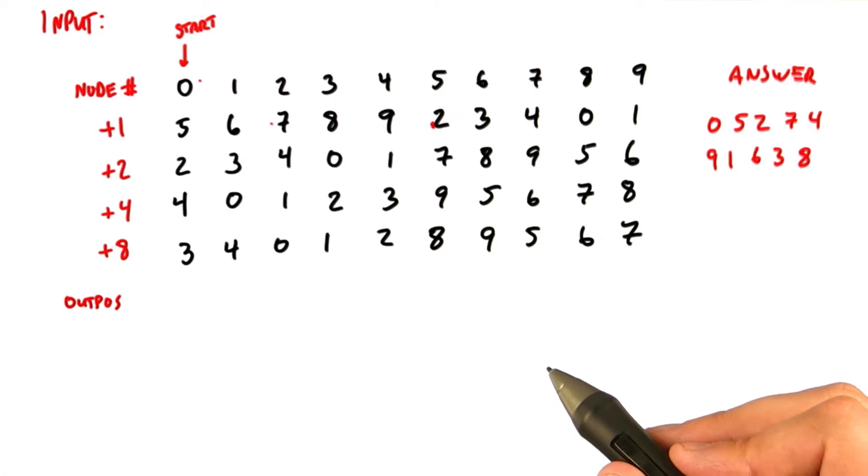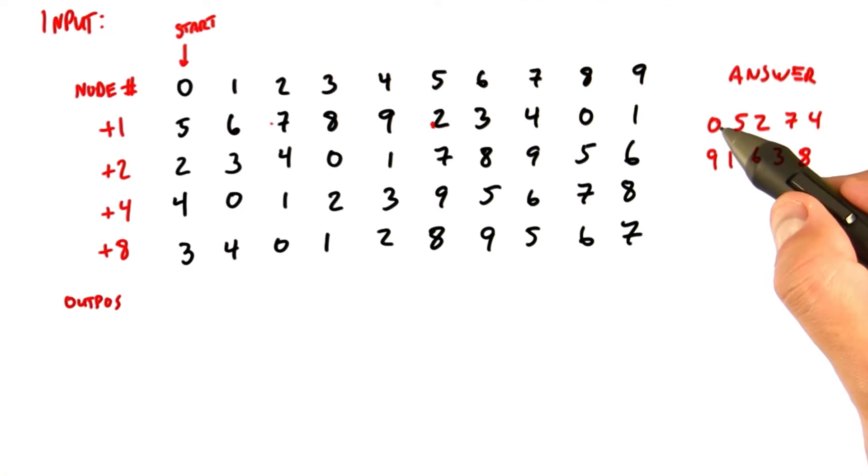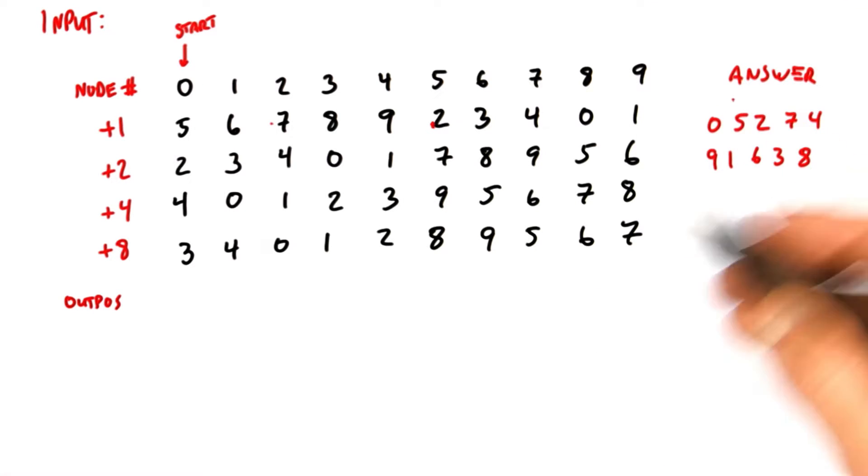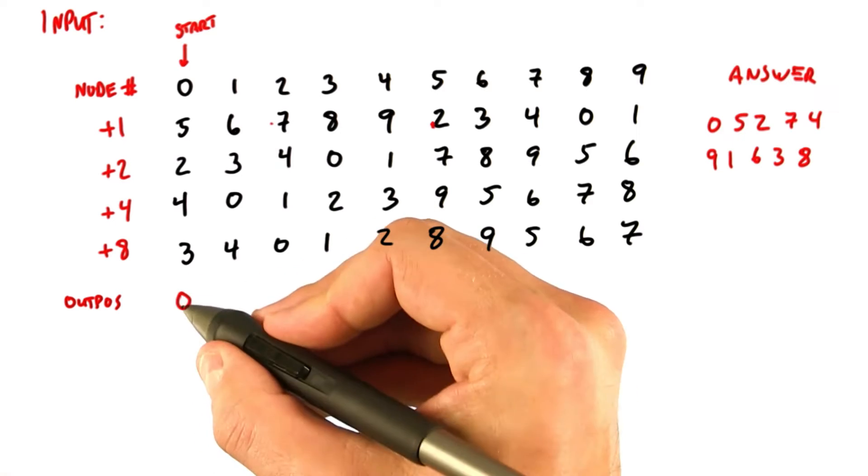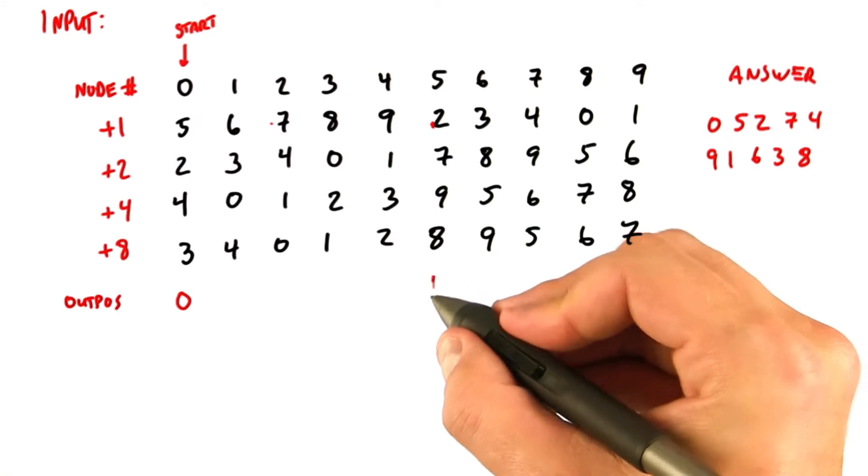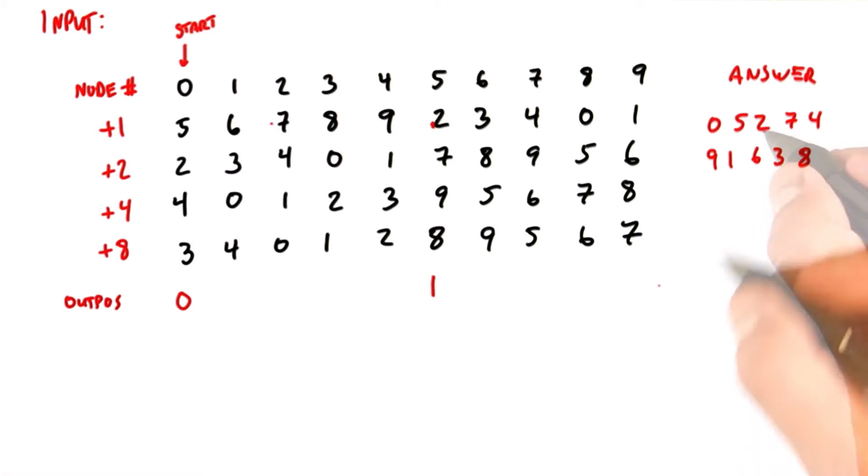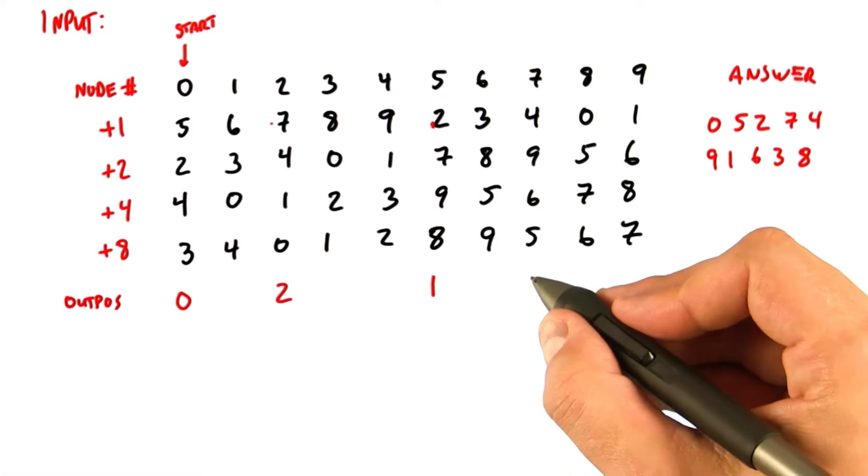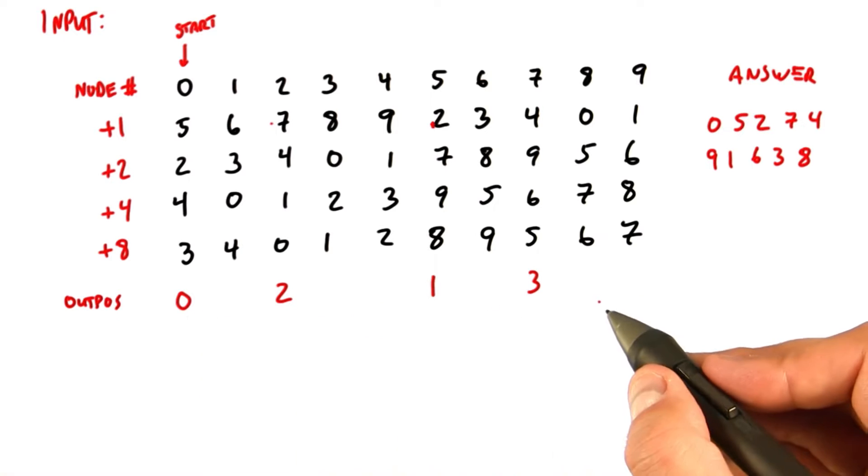Just to understand what outpause is going to look like, we see that node 0 ends up at location 0 in the output list, so outpause better be 0. Node 5 ends up at the first location in the output list, so it's going to get outpause equals 1. Node 2 is next, and then node 7, and so on. This is what we're trying to compute here.